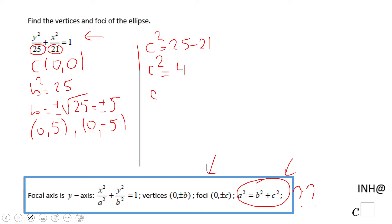So c is going to be nothing else than square root of 4 plus or minus which is giving us plus and minus 2. So now we know the foci. The foci are (0, 2) and (0, -2).